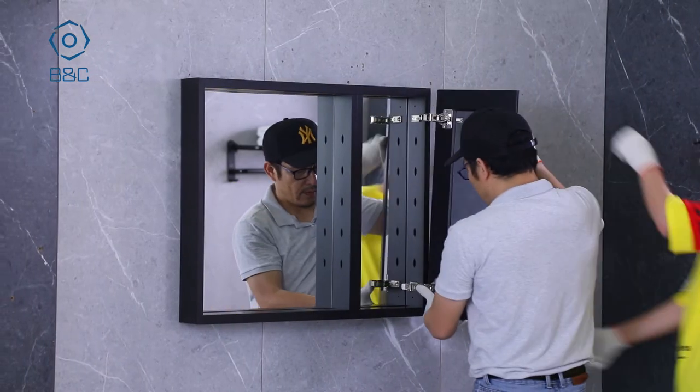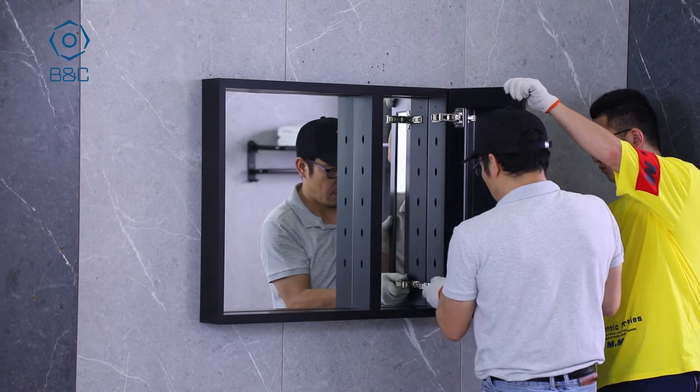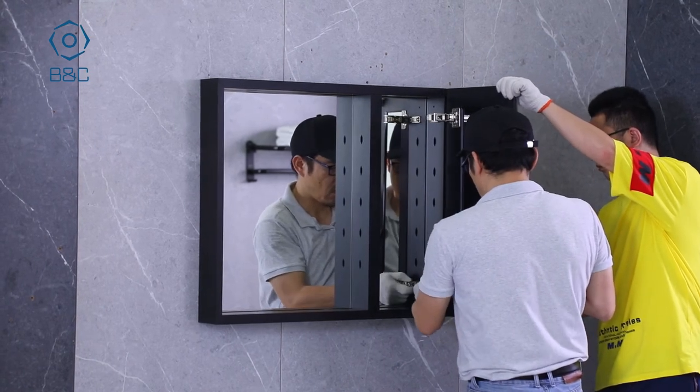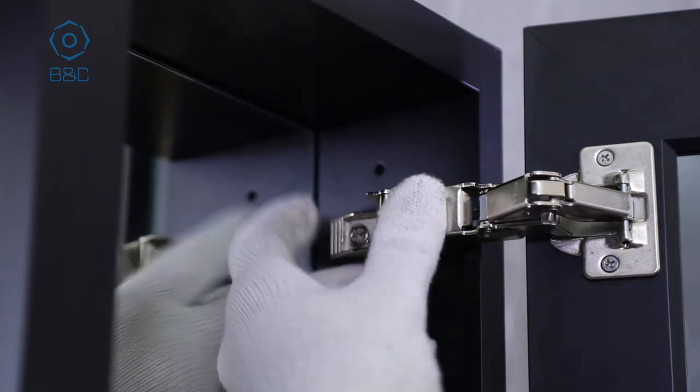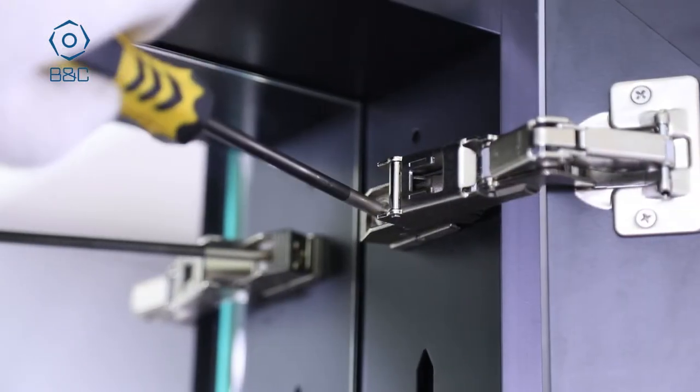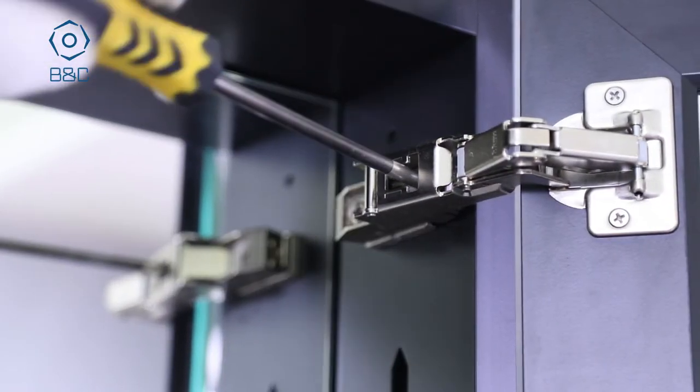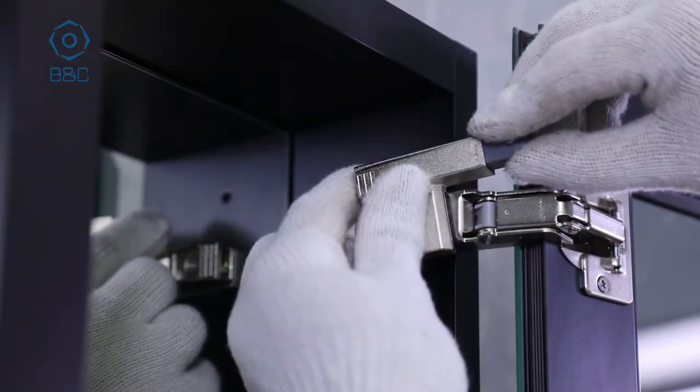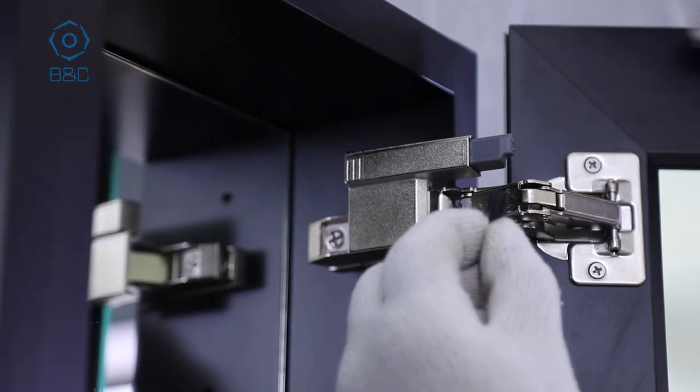For door installation, line hinges up against hinge mounting plates and snap into position. Door should snap locked when about one inch from being fully closed. Door should be placed even with the cabinet. Insert bumper.